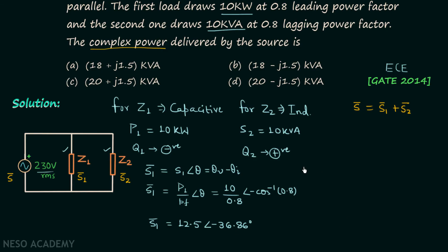Let's find out the complex power S2. It will equal S2 angle theta, and this time theta is going to be positive because Q2 is positive. S2 is already given in the question. So the complex power S2 equals 10 angle 36.86 degrees.